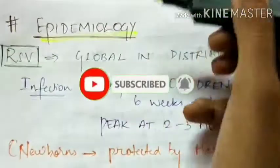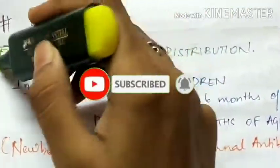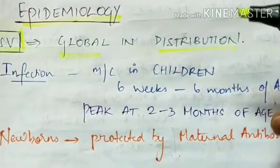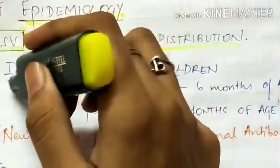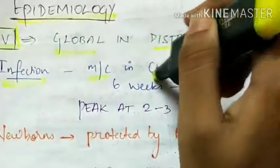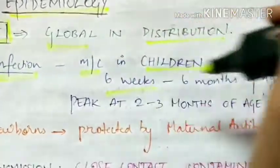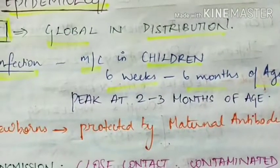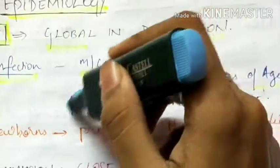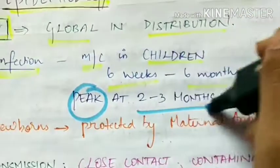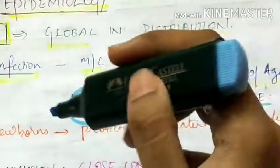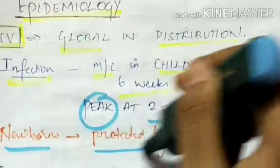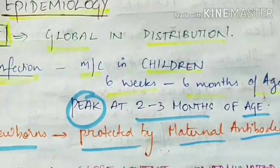Epidemiology: respiratory syncytial virus is global in distribution, distributed worldwide. The infection is most common in children between 6 weeks and 6 months of age, and the peak incidence of RSV infection is at 2 to 3 months of age, because before 2 months newborns are protected by maternal antibodies.